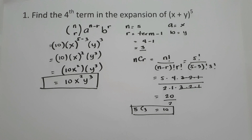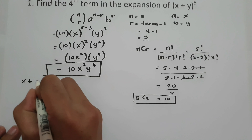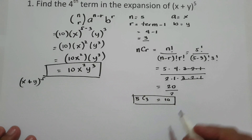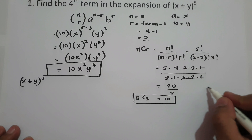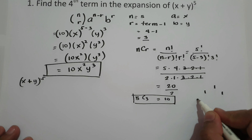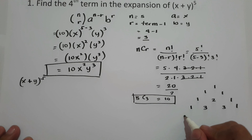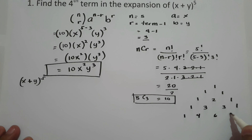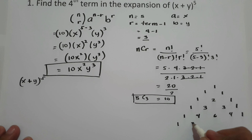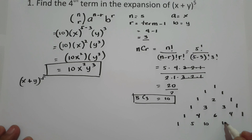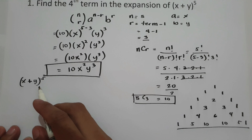To prove our answer is correct, we're going to expand x plus y raised to 5 using Pascal's triangle and look for the fourth term. We have the rows: 1; 1 1; 1 2 1; 1 3 3 1; 1 4 6 4 1; and since the exponent is 5, we use the fifth row: 1, 5, 10, 10, 5, 1. These are the coefficients we'll use to expand x plus y raised to 5.